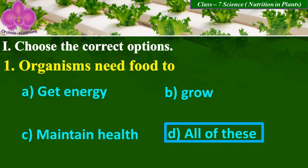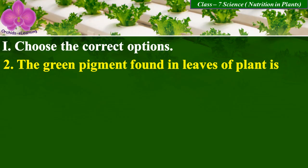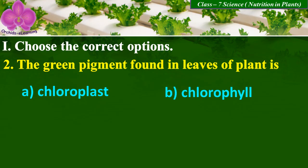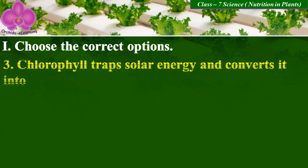Answer: all of these. The green pigment found in leaves of a plant is A: chloroplast, B: chlorophyll, C: myoglobin, and D: xanthophyll. Answer: B, chlorophyll. Question number three: chlorophyll traps solar energy and converts it into — option A: